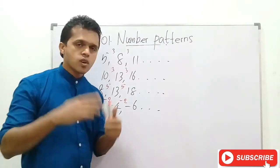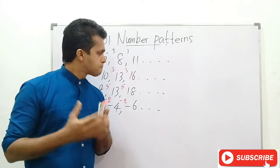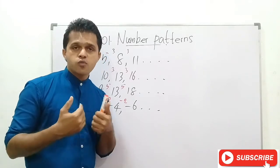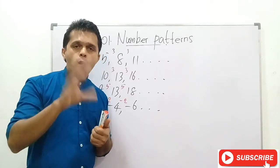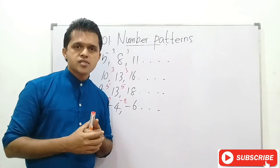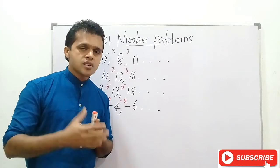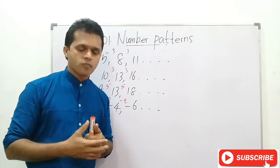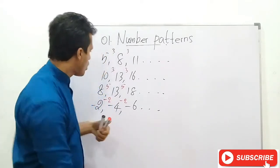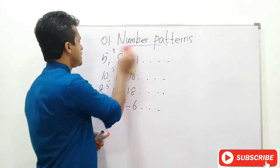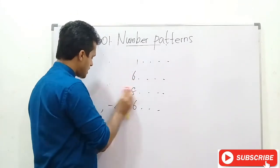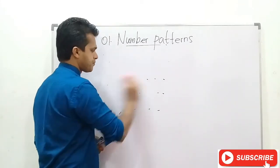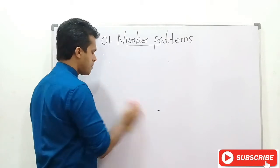So a number pattern is a sequence where you can identify a common difference. A number sequence with a common difference is a number pattern. Now we are going to learn about the terms of a number pattern.